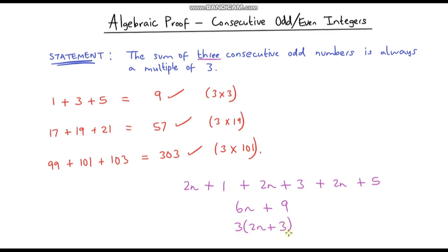Because we can divide both numbers by 3, the expression 6n + 9 = 3(2n + 3) is a multiple of 3. It doesn't matter what number we put in for n — as soon as we multiply by 3 we have a multiple of 3. So we have just proved that the sum of three consecutive odd numbers is always a multiple of 3.